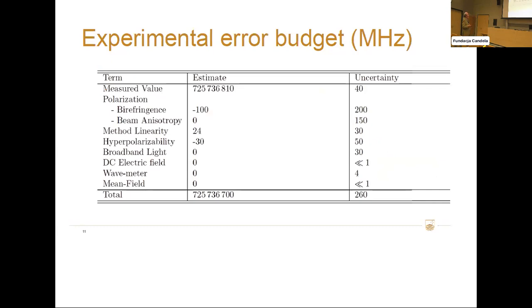I will mention, though, the experimental error budget. The dominant source of uncertainty is the birefringence of the probe beam, and also the beam anisotropy and the method linearity to give a total. So here's the total tune-out frequency in megahertz: 725,736,700 plus or minus 260.